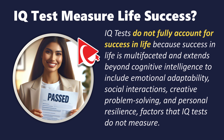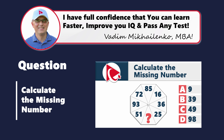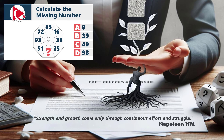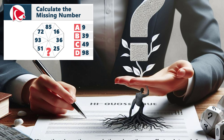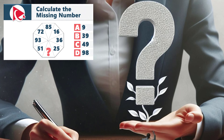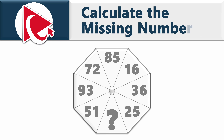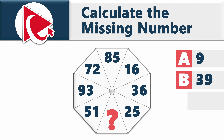To solve this next question, let's embrace the famous quote from Napoleon Hill: 'Strength and growth come only through continuous effort and struggle.' You're presented with an octagon that has seven numbers inside and the eighth is missing. Starting from eight o'clock, the numbers are 51, 93, 72, 85, 16, 36, 25 — and then comes the missing number. Choices: A) 9, B) 39, C) 49, D) 98.